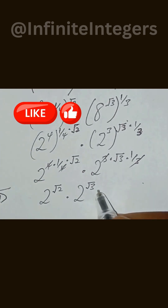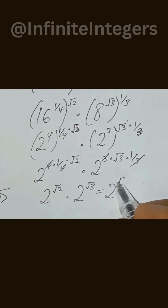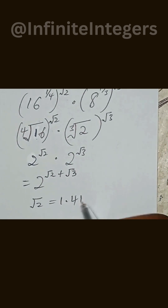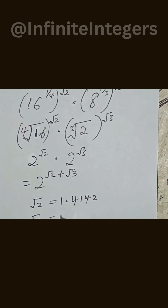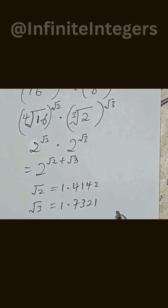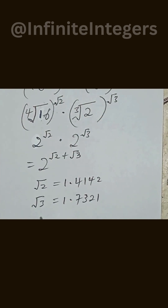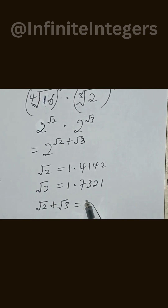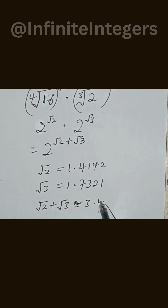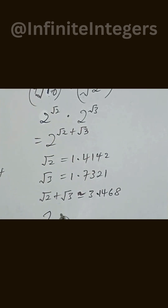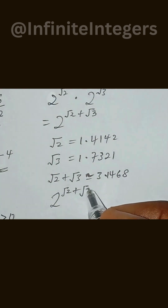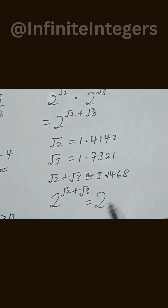So we can now add the exponents, and this gives us 2 to the power of square root 2 plus square root 3. Therefore, 2 to the power of square root 2 plus square root 3 is the result.